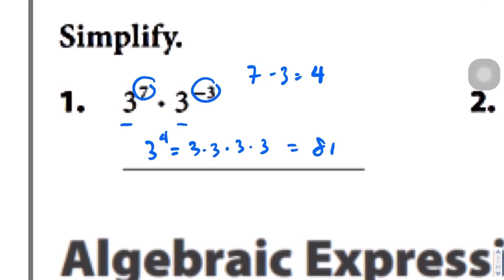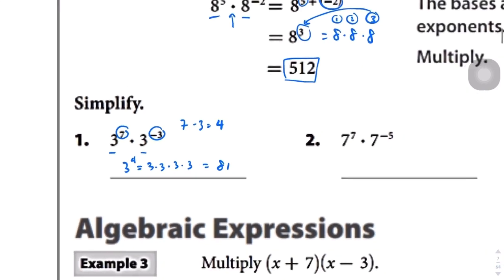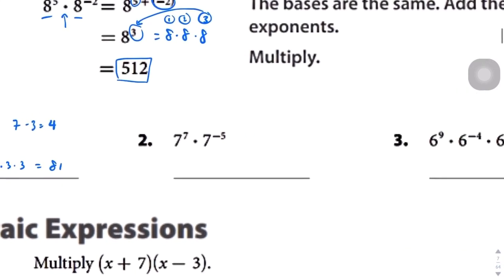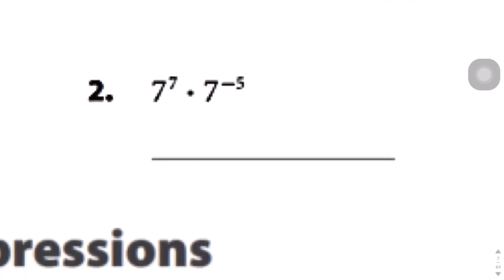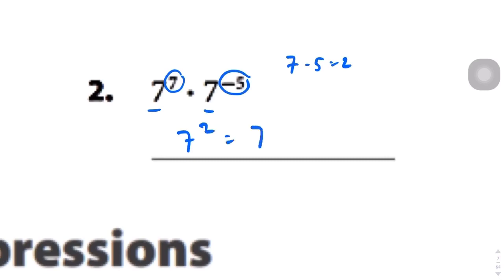Question number 2: 7 to the power of 7 and 7 to the power of negative 5. They have the same base, so we're just going to add these two numbers together. 7 minus 5 gives us 2. So this is technically 7 to the power of 2, which is 7 times 7, which is 49.